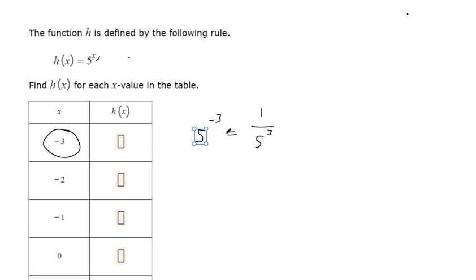5 to the negative 3rd, that is the same thing as 1 over 5 to the 3rd. And so now we can figure out what 5 to the 3rd is. It's 5 times 5 times 5, so it's 1 over 125 here. That's the denominator.